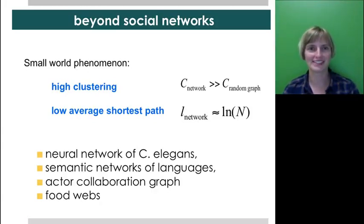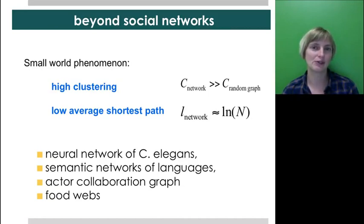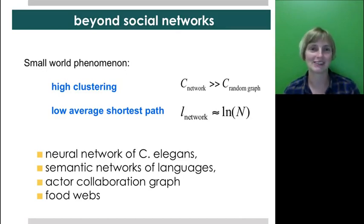So far we've established two things. There is a small world phenomenon in social and other networks, and there's interesting local structure which we can capture in part by measuring clustering. This extends beyond social networks — you have high clustering and short average shortest paths in neural networks, actor collaboration networks, semantic networks of languages, and networks such as food webs.